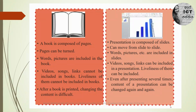A book is composed of a number of pages. Similarly, an electronic presentation is composed of slides. When you turn pages in a book, you can see what things are inside the book. Similarly, when you go through slides, you can see what things are included in your electronic presentation. In a book, pages can be turned; in an electronic presentation, you can move from slide to slide.